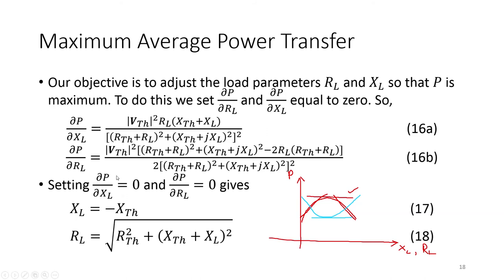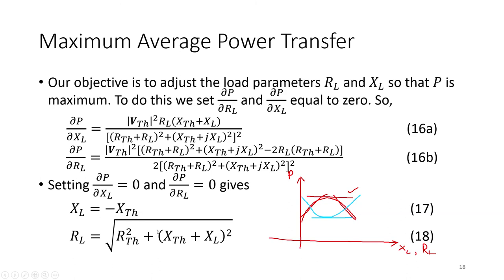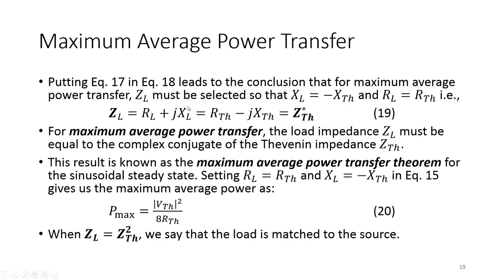When we take these partial derivatives and equate them to zero, we reach the solution: XL equals minus XTH, and RL equals RTH. Putting equations 17 and 18 together leads to the conclusion that for maximum average power transfer, ZL must be selected such that XL = −XTH and RL = RTH — meaning ZL equals the complex conjugate of ZTH.